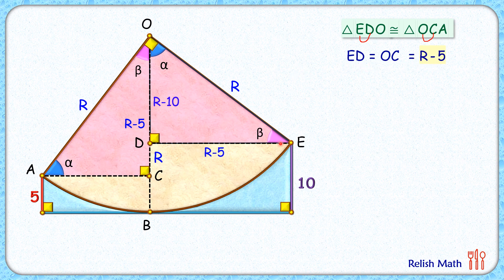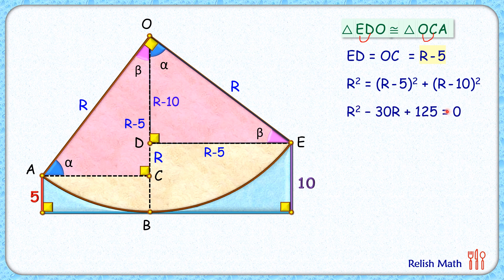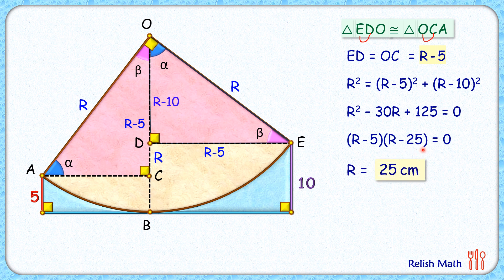So ED equals r minus 5. In right triangle ODE, applying the Pythagorean theorem: r² = (r − 5)² + (r − 10)². Expanding the brackets, simplifying, and taking all terms to one side gives a quadratic equation. Solving by splitting the middle term gives either r = 5 or r = 25. From the figure, r cannot be 5 because r minus 10 would become negative, so the radius of the quadrant is 25 centimeters.